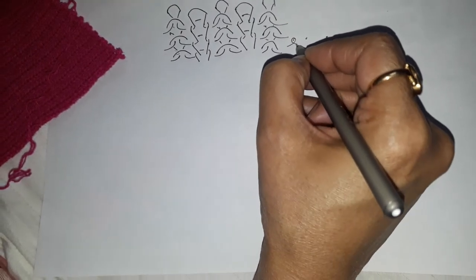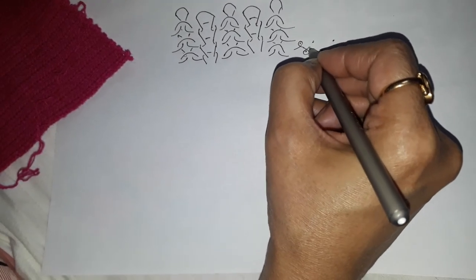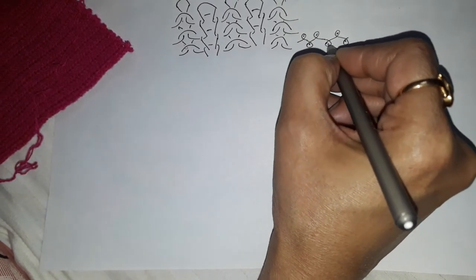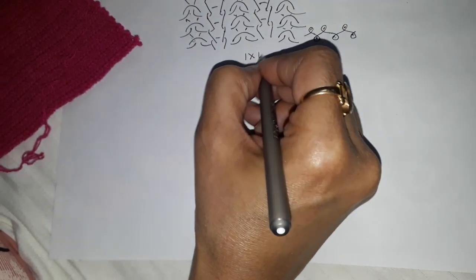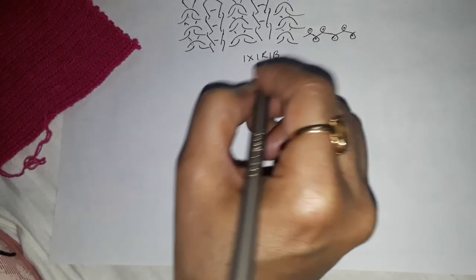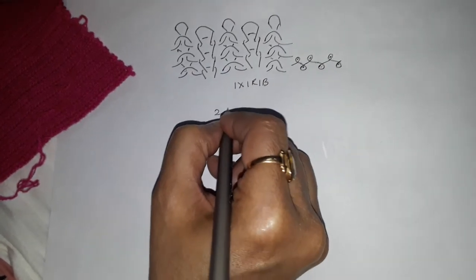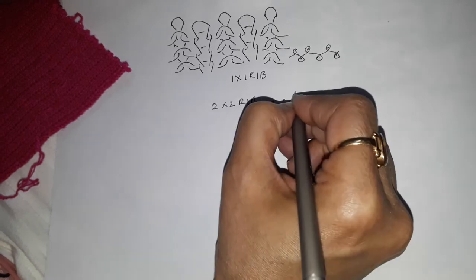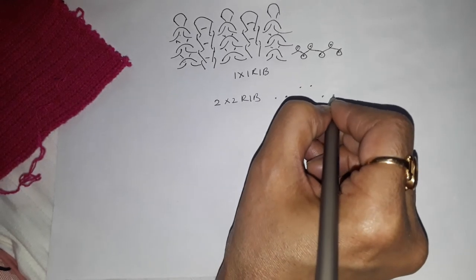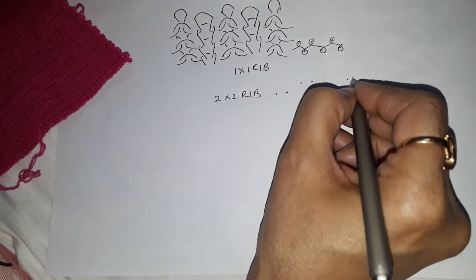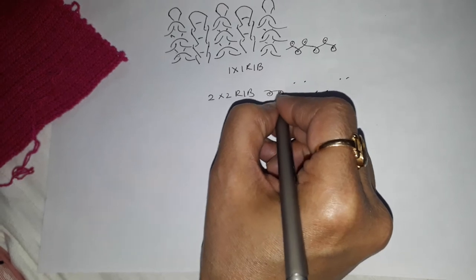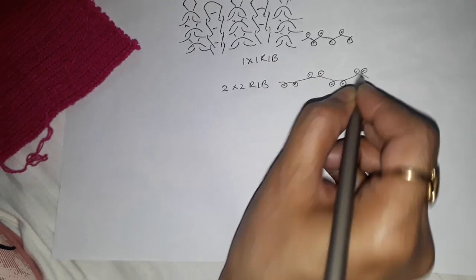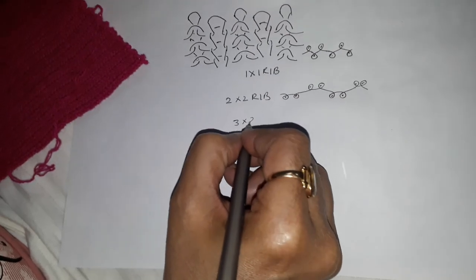You have a head and you have an arm — this is a one-by-one rib. If you want to do a two-by-two rib, you have two arms and two heads. And for a three-by-two rib, the arrangement continues accordingly.